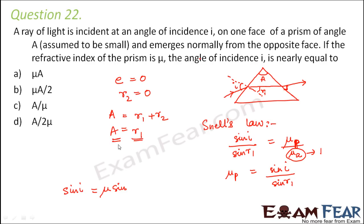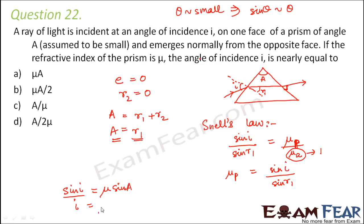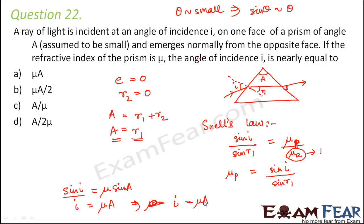Since R1 equals A, we get sin I equals mu times sin A. Now for small angles, sin theta is approximately equal to theta. Applying that approximation, sin I becomes I and sin A becomes A. Therefore I is equal to mu times A. The correct option is A.